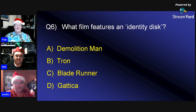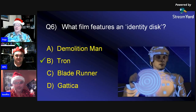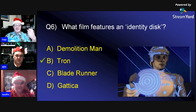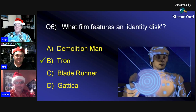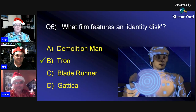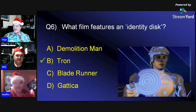Answer six: The film featuring an identity disc is Tron. Super nerds will know this. In Tron: 'You'll each receive an identity disc' — it's the world's most exciting frisbee. If you lose your disc or fail to follow commands, you'll be subject to immediate de-resolution.